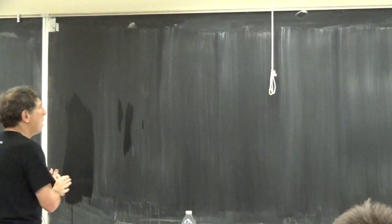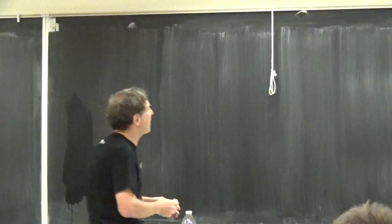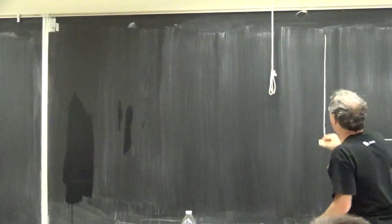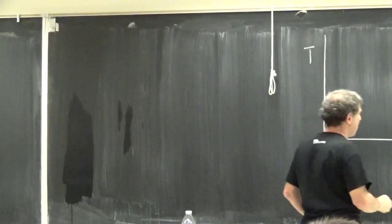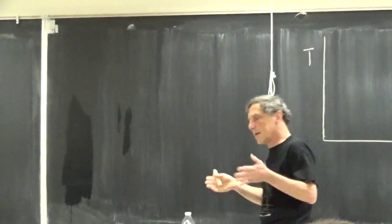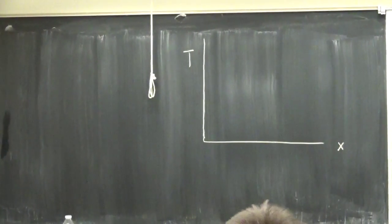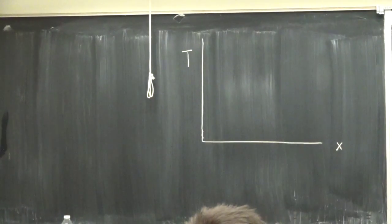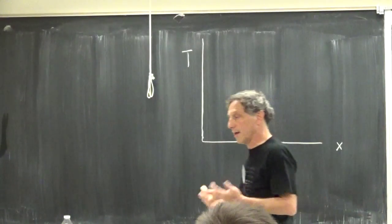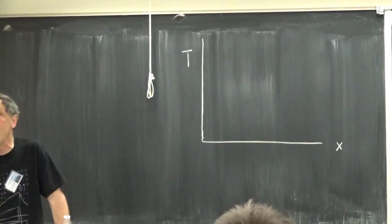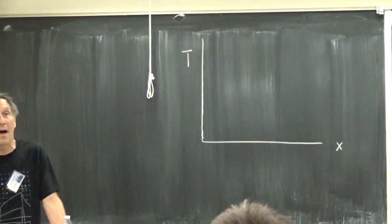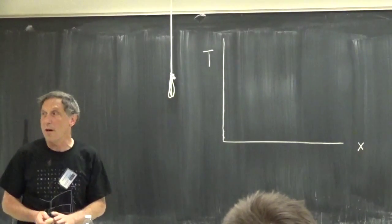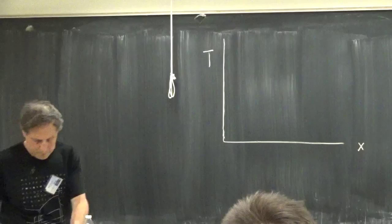Let me draw my picture of the cuprate phase diagram. So there are two axes: temperature and doping concentration. I'll be more or less thinking about hole-doped cuprates. There are many different hole-doped cuprates and they differ in some details concerning their phase diagrams, so this is not supposed to be a precise description of any one particular material — but you'll see that what I draw is plenty complicated.